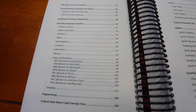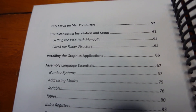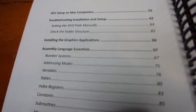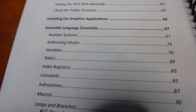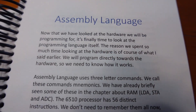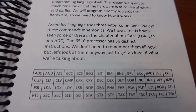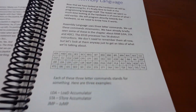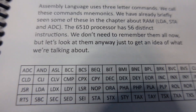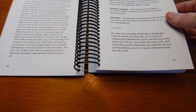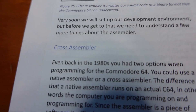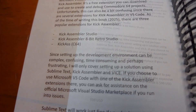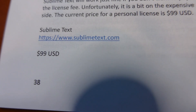This book is set up for beginners, and when there is a more complicated topic he simply says he's not covering it in this book. It's a beginning book, so complex topics like scrolling are not covered. In the assembly language section he explains all the various commands for the 6510 processor — there are 56 distinct instructions. He then goes into using a cross assembler to write code for the Commodore 64, and the development environment uses Sublime Text.